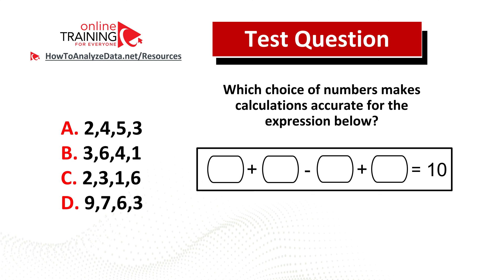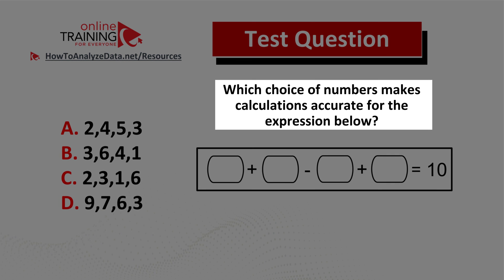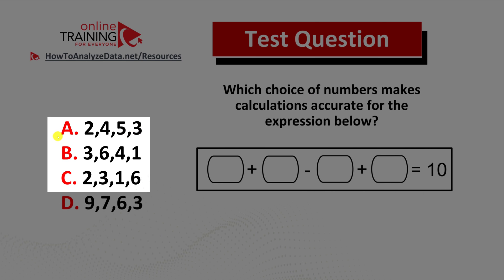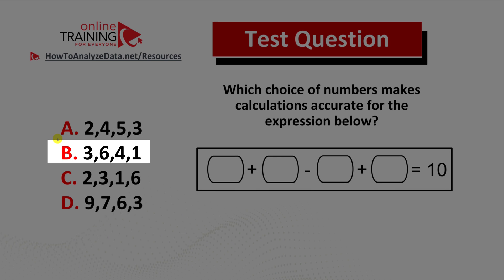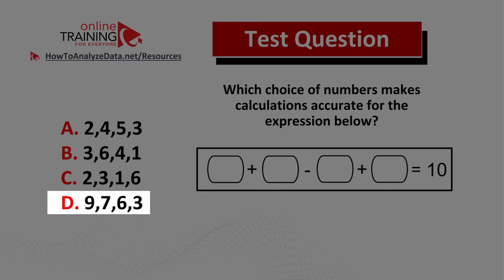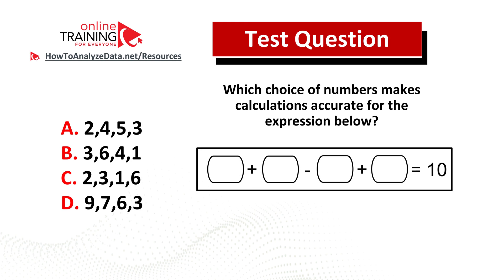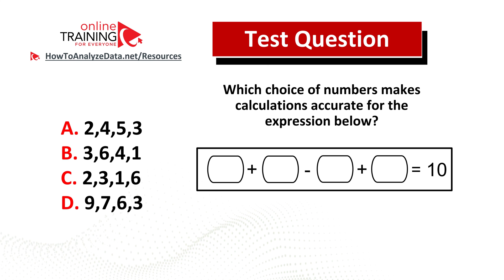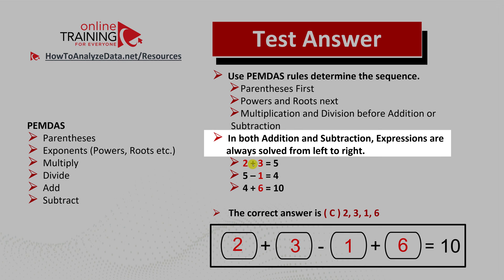Let's look at an intermediate level question we frequently see on the test. Which choice of numbers makes calculations accurate for the expression below? You're presented with an expression where you add numbers one and two, subtract number three, then add number four to get a result of ten. The four possible choices are: choice A two four five three, choice B three six four one, choice C two three one six, and choice D nine seven six three. Now might be a good time to pause this video to come up with the solution on your own.